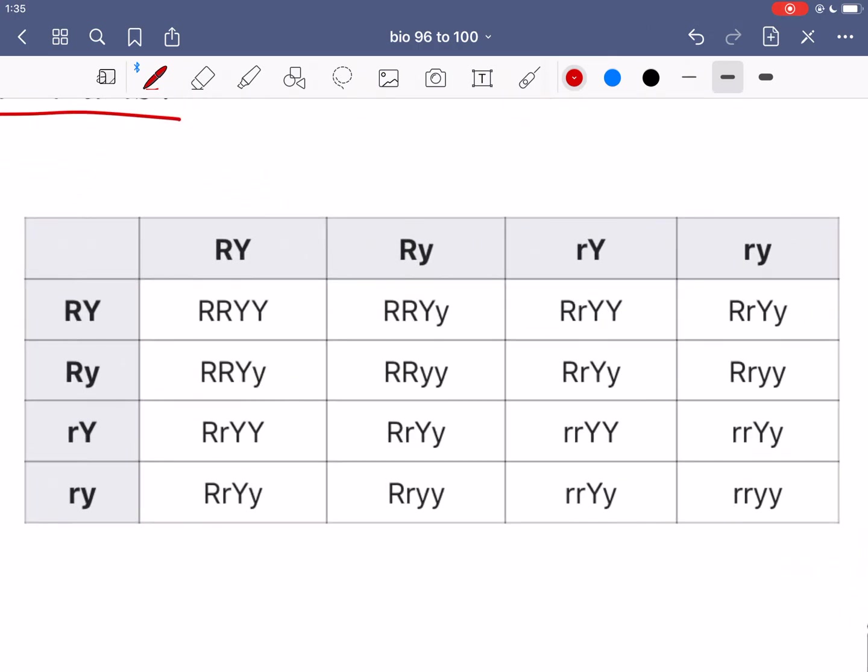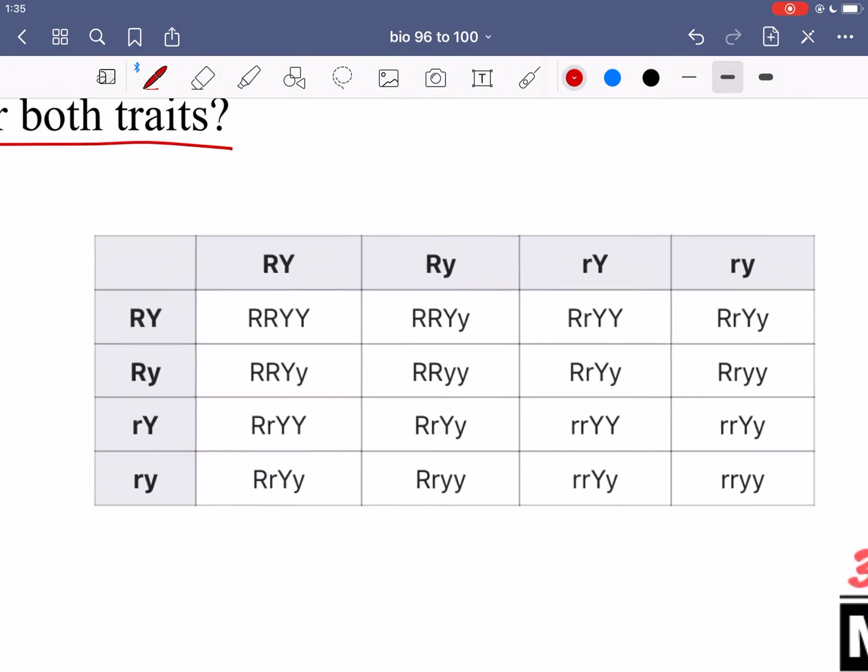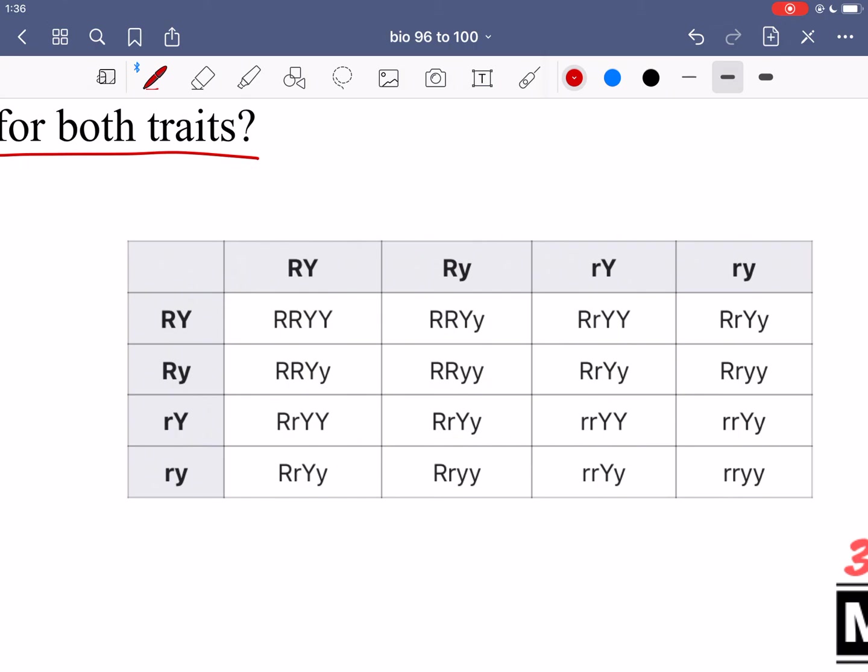So if you do a Punnett square and set this up you will get something like this. Just set up, if we're looking at R and Y as the two alleles instead of A and B, just write down all the possible formations of alleles that can be passed down. So all the possible gametes.